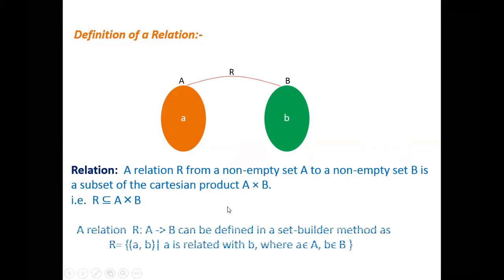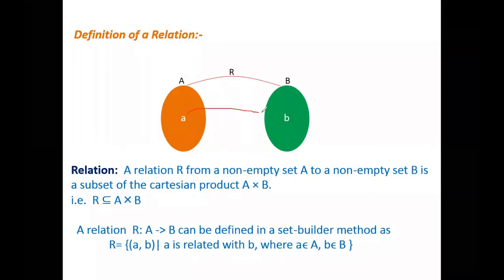In set-builder method we can write R as the ordered pair (a comma b), where a is related with b. This a belongs to set A and this b belongs to set B. Thank you.